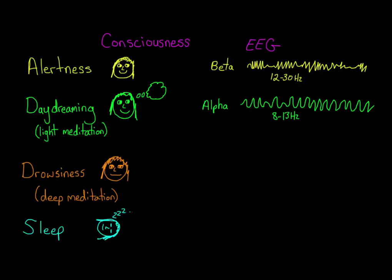When you do get drowsy or you're in deep meditation, an EEG would show theta waves, which are even slower than alpha waves. They're like 4 to 7 hertz. You also see this pattern right after you first fall asleep when you're sleeping very lightly.